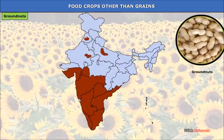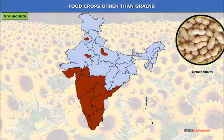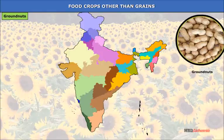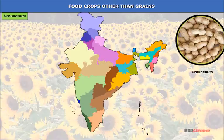Groundnuts: India is the largest producer of groundnuts in the world. It needs high temperature of 25°C and moderate rainfall of 75 centimetres. It grows well in dry, light sandy soils under irrigation. It is a Kharif crop. Most of the groundnut is grown in peninsular India; the main producers are Gujarat, Andhra Pradesh, Maharashtra, Uttar Pradesh, Tamil Nadu and Punjab.